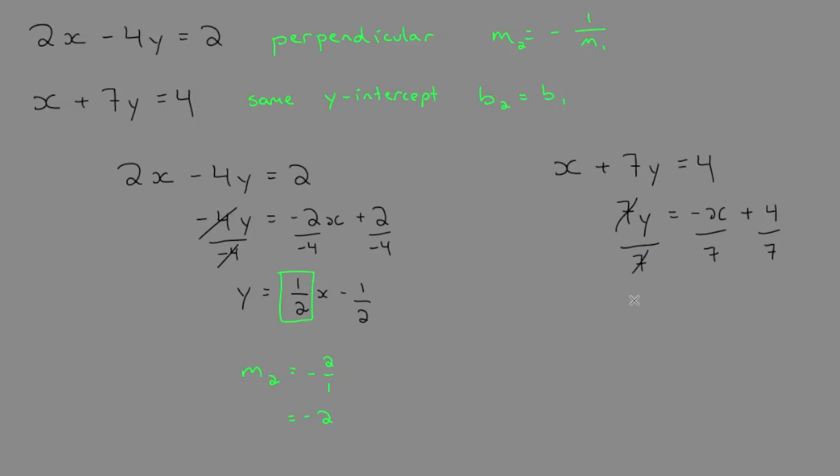You can see that gets us y equals negative 1/7 x plus 4/7. That's our y-intercept. Dividing by 7 was important, so we get 4/7.